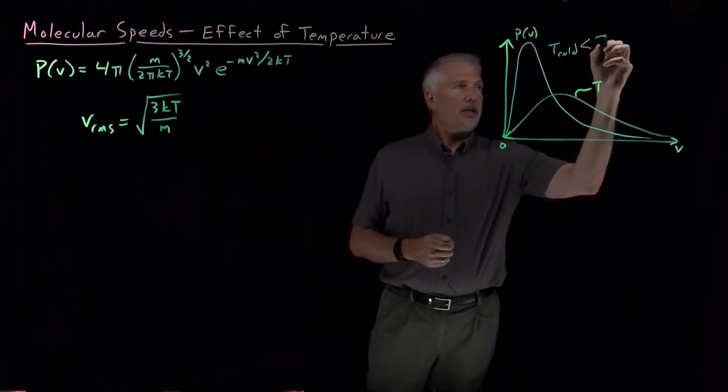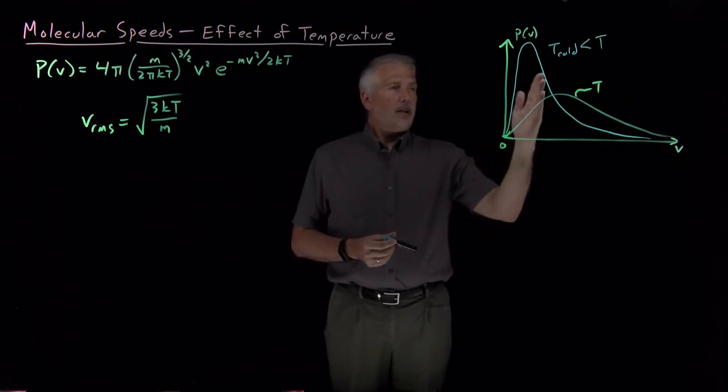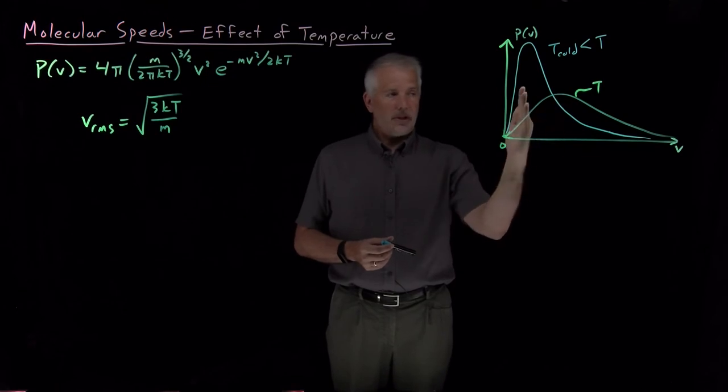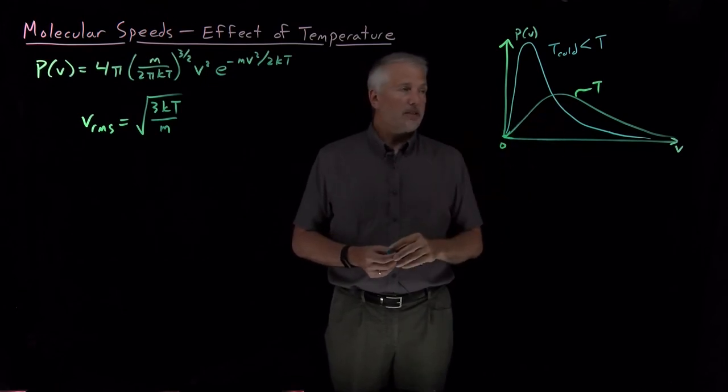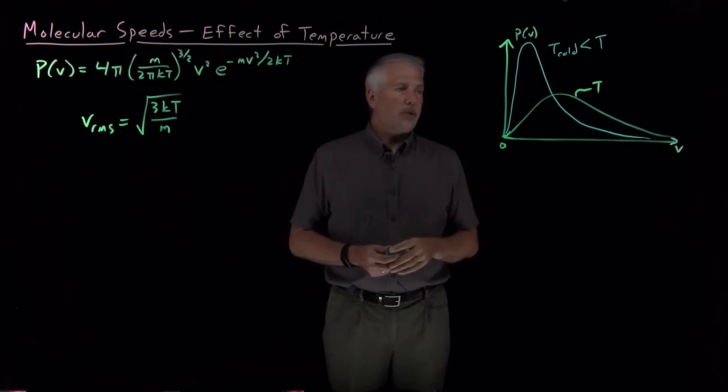If this cold temperature is less than the temperature for this curve, then I've lowered the most probable velocity to a lower value. So I've shifted it lower on the speed axis. Likewise, the root-mean-square and the average speed will be lower as well.